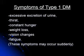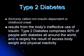Symptoms of type 1 DM are excessive excretion of urine, thirst, constant hunger, weight loss, vision changes, and fatigue.